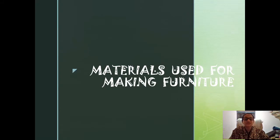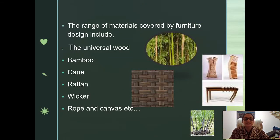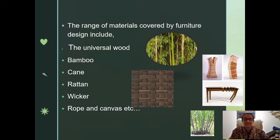The range of materials used for furniture design includes the universally accepted and ever-favorite wood. Along with wood, we can consider other natural materials of plant origin such as bamboo, cane, rattan, wicker, and rope. In Kerala, we are very familiar with rope made out of coir. It can also be made from jute, canvas, and many other natural materials. Nowadays, people are also making furniture from water hyacinth, which is considered a waste material.